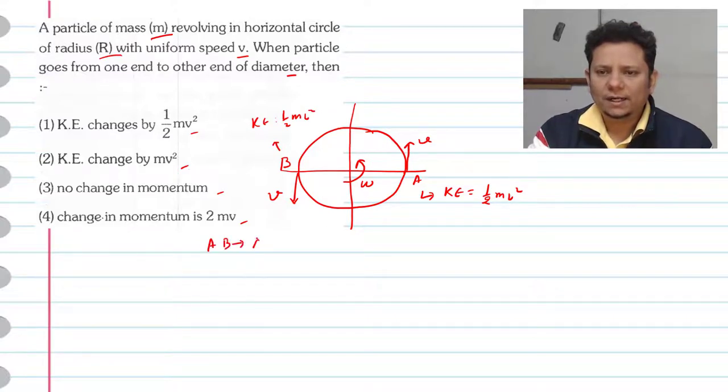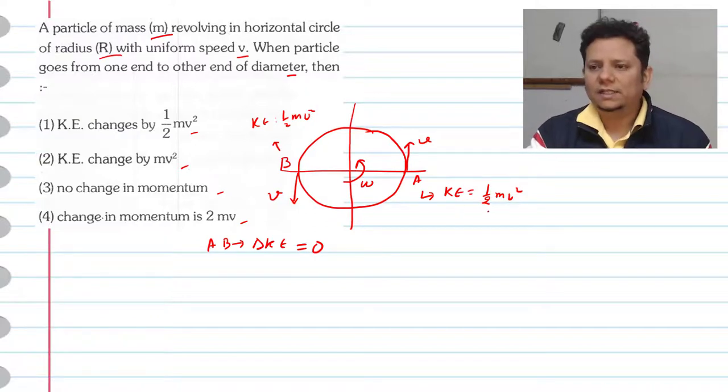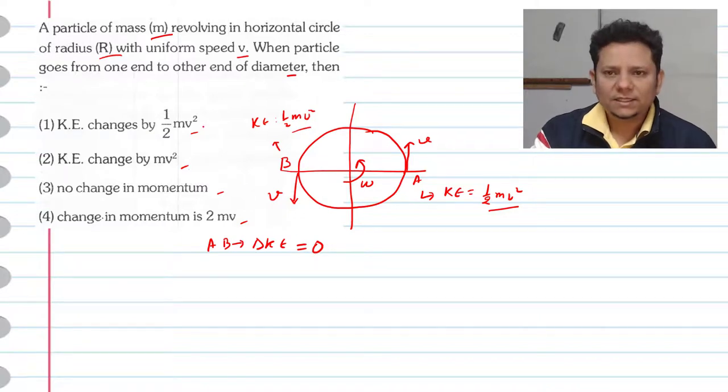So between A and B, kinetic energy change will be equal to 0, because the initial kinetic energy half mv square was the same. So change in kinetic energy is 0. Hence option 1 is not correct, option 2 is not correct.